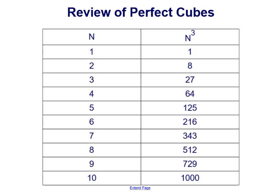So if we fill in our list, we have 1 cubed is 1, 2 cubed is 8, 3 cubed is 27, 4 cubed is 64, 5 cubed is 125.